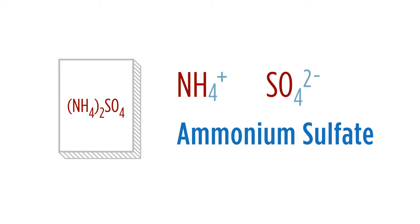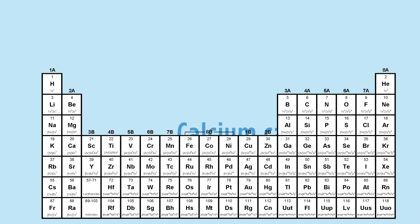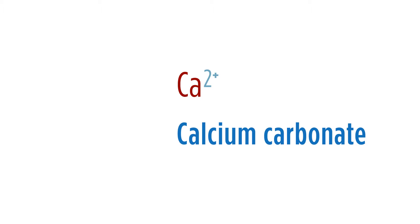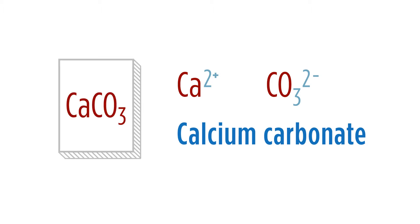One more example going the other way: calcium carbonate. Calcium is group 2, so it has a plus 2 charge. Carbonate is a polyatomic we need to know — it's negative 2. Therefore the formula is simply CaCO3. This covers our simple ionic compounds: those with simple ions and those with polyatomics.